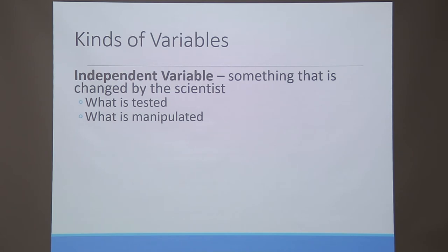This is the basic difference between independent and dependent variables. What you are about to find at the end of the research is the dependent variable, and all the factors that will help you find the final outcome are the independent variables. These independent variables will have an effect on the dependent variable, and based on that you will get the final result. The result could be either positive or negative, but there is nothing called a negative or positive result — any result is totally acceptable in research work.